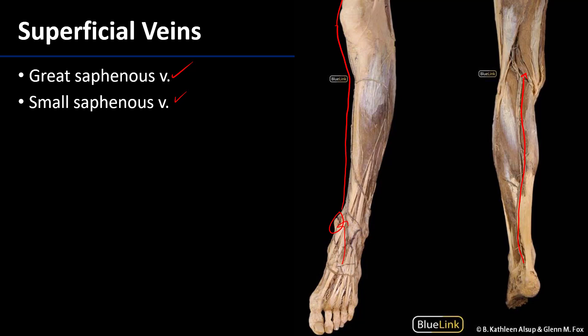Oftentimes the great saphenous vein and tributaries of it might be harvested for donor vessels for coronary artery bypass grafting, or CABG.